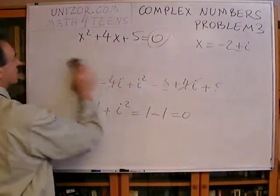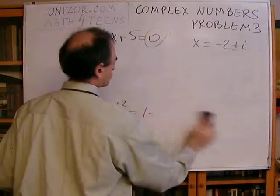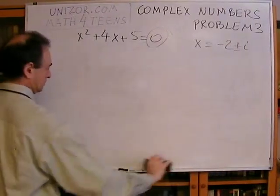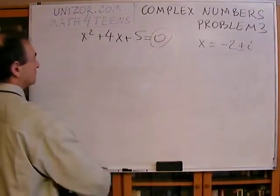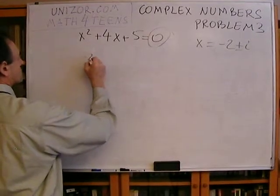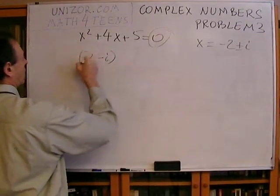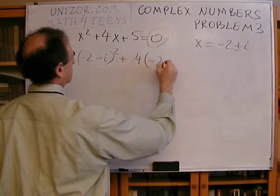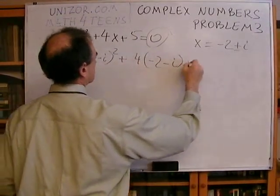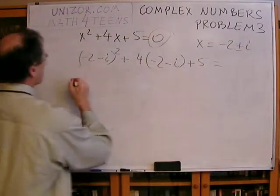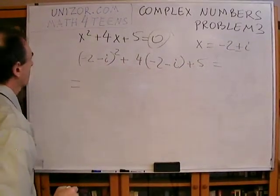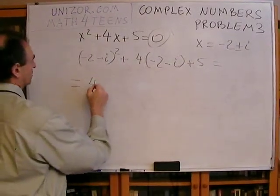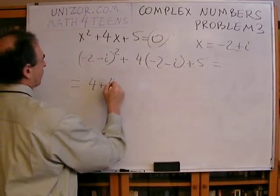And now let's do the second one. It should be very similar. So, it's minus 2 minus i squared plus 4 times minus 2 minus i plus 5 equals 4 plus 4i plus i squared.